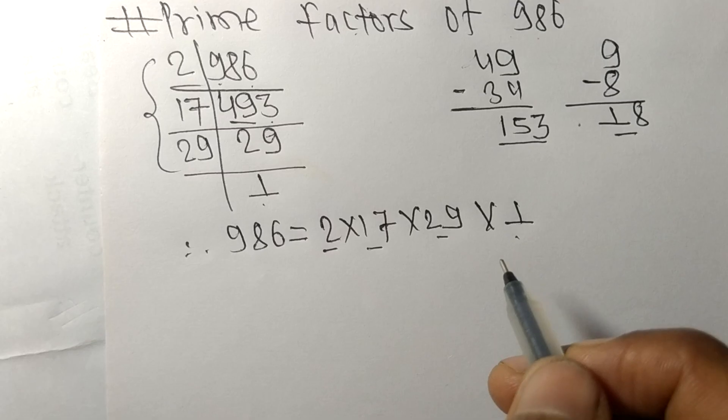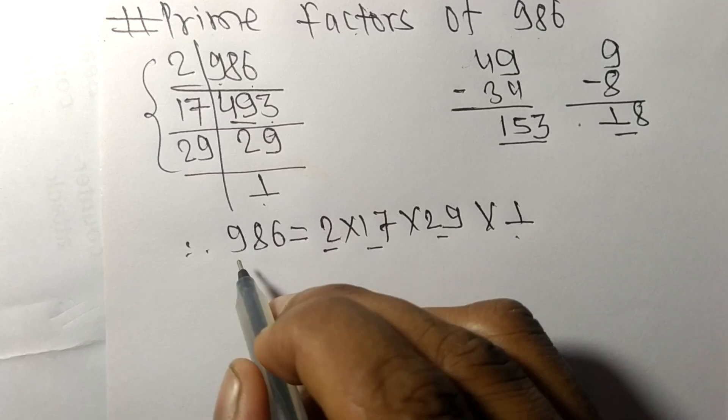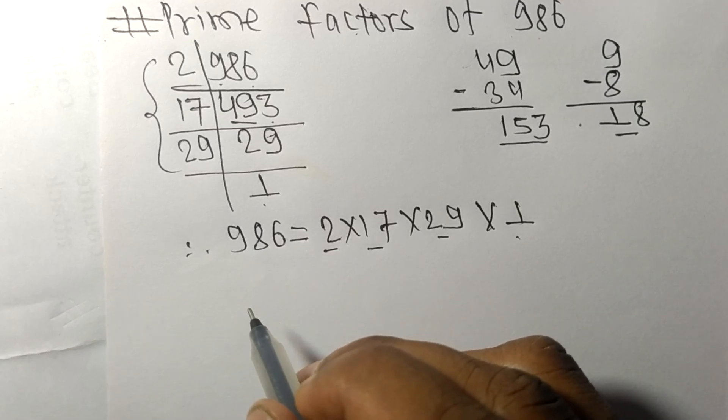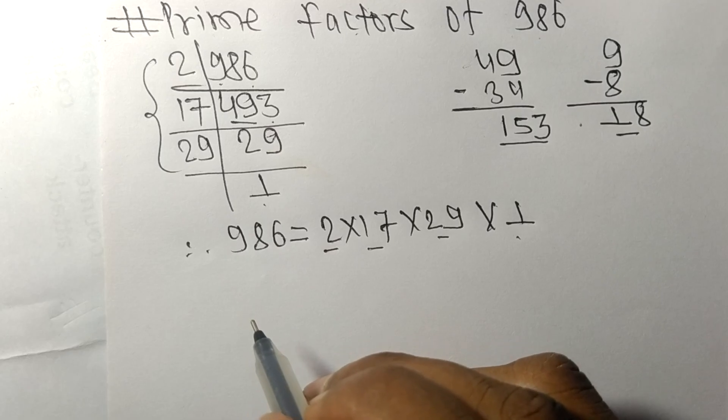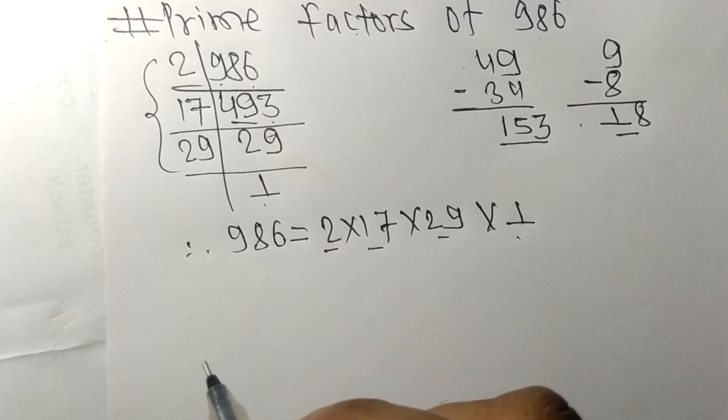So 2, 17, 29, and 1 are the prime factors of 986. That's all for today. Thanks for watching.